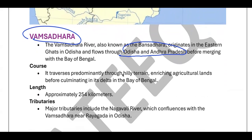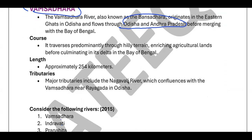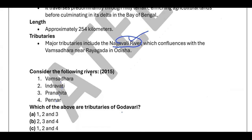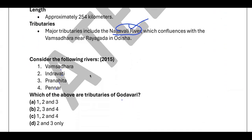There is a dispute going on between Odisha and Andhra Pradesh regarding the Vamsadhara river. One major tributary of Vamsadhara is Nagavali — you need to remember that. Now, after studying all this, it becomes easy to solve the 2015 question: 'Consider the following rivers — Vamsadhara, Indravati, Pranahita, Pannur — which of the above are tributaries of the Godavari?'